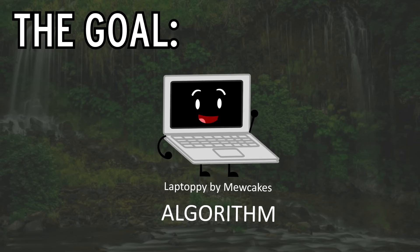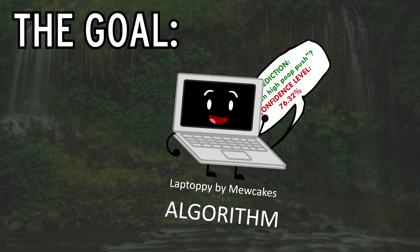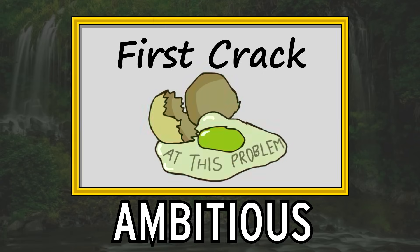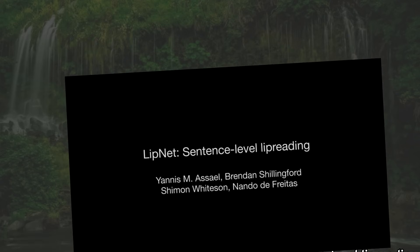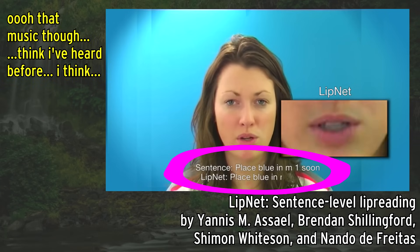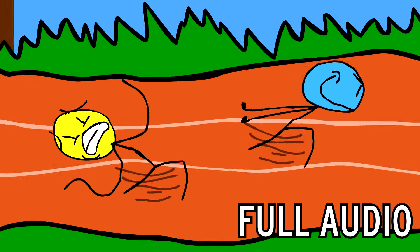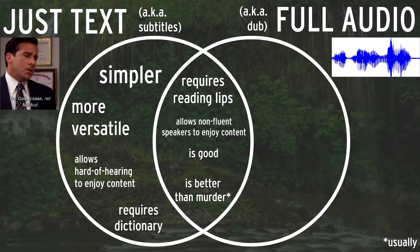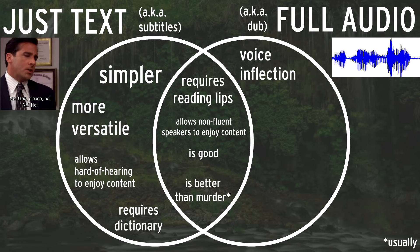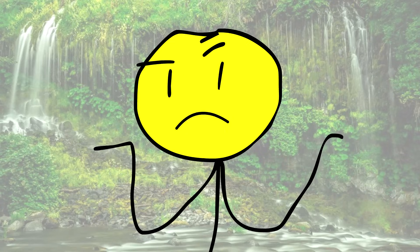The goal? Give the algorithm a silent video of someone talking, and it should spit out the sounds it thinks they said. For our first crack at this problem, we were a little ambitious. Whereas most lipreading programs just output text subtitles of what was said, we wanted to go the extra mile and output full audio — to include features like voice inflection, pauses, breathing noises, and lip smacking.